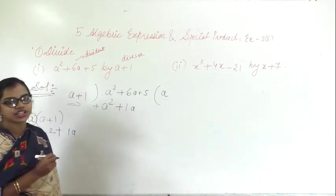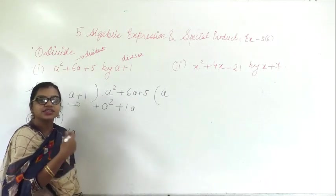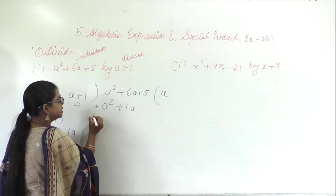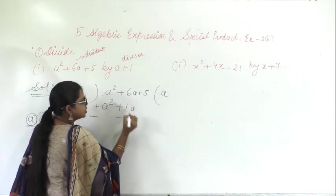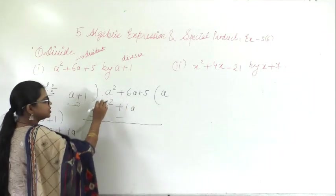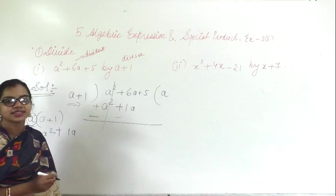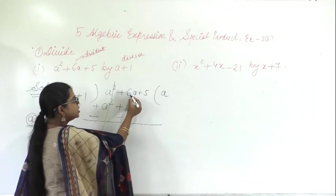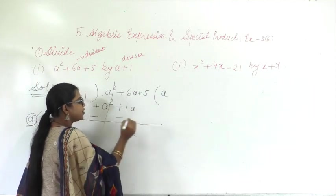In division we change the sign — if plus is there, you take it as negative; if negative is there, you take it as positive. So here, plus sign becomes negative. Now subtract: plus and minus cancel, and plus into minus is minus. So 6a minus 1a is 5a.